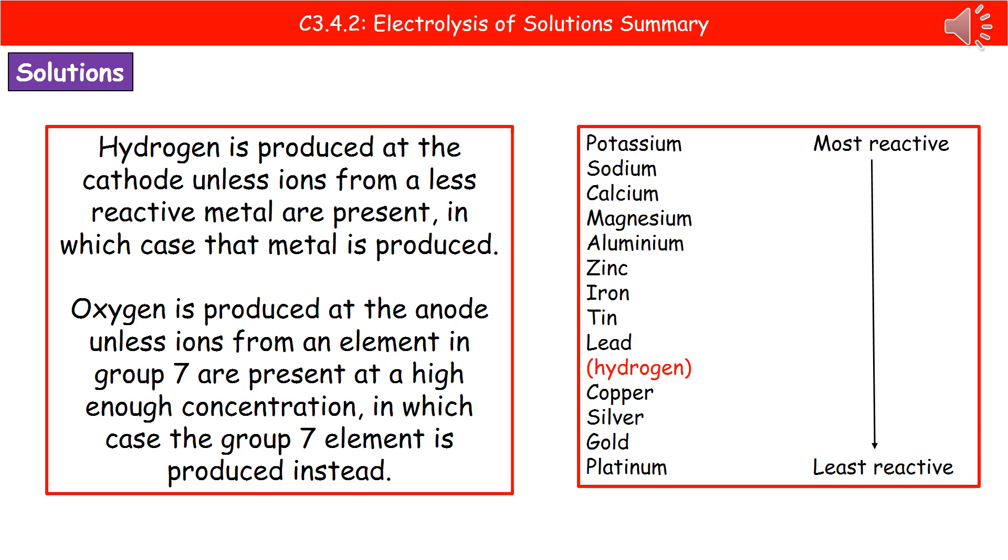For the cathode, it will produce hydrogen unless ions from a less reactive metal are present—in that case, the metal is produced. We determine this using the reactivity series. Hydrogen is shown in red in brackets. Anything beneath hydrogen is less reactive: copper, silver, gold, and platinum.